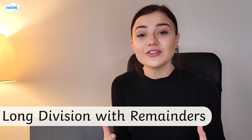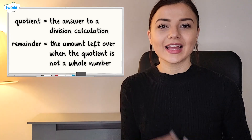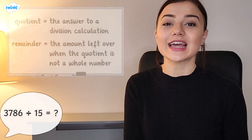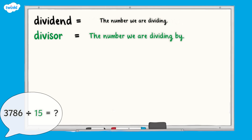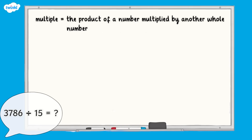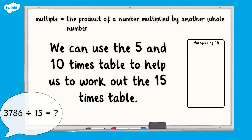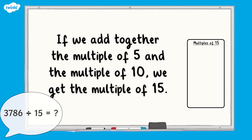This video is here to show you how to use the long division method when the divisor is a two-digit number. Before we start, let's familiarise ourselves with some of the mathematical vocabulary we use when carrying out division calculations. When carrying out a division calculation, if the answer or the quotient is not a whole number, then we have some left over — this is called the remainder. Let's start by using long division to divide 3,786 by 15. 3,786 is our dividend and 15 is our divisor. When we divide by a two-digit number, it's a really good idea to list the first multiples of our divisor first. To help find the multiples of 15, we could use our knowledge of the 5 and 10 times tables — adding the multiple of 5 and the multiple of 10 gives the multiple of 15. Here are the multiples of 15 up to 10 times 15.